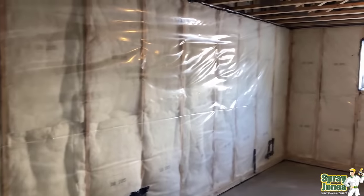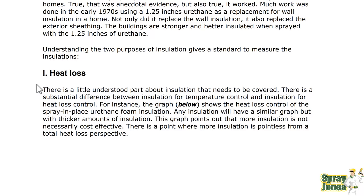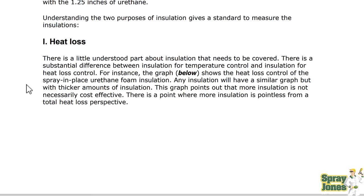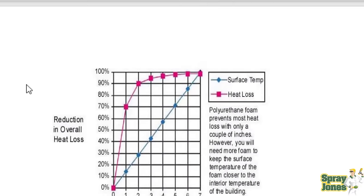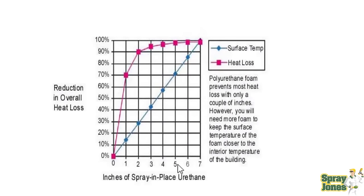There is a substantial difference between insulation for temperature control and insulation for heat loss. The graph shows the heat loss control of spray-in-place urethane foam insulation. More insulation is not necessarily cost-effective — there's a point where more insulation is pointless from a total heat loss perspective. Looking at 1 inch, 2 inch, 3, 4, 5 inches: the surface temperature inside is rising and heat loss has flattened out just over the 2-inch mark. So when we get to 3 and 4 inches, every inch after the 3rd is throwing money away because we're not achieving drastic increases in surface temperature.